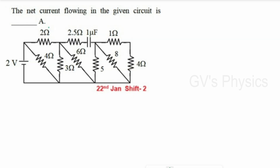Eighth question: Find the net current flowing through the given circuit. The circuit contains a capacitor — in steady state, no current flows through the capacitor branch, so that branch and any branches in series with it can be neglected. We redraw the simplified circuit.